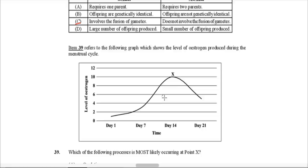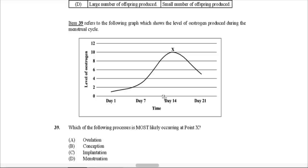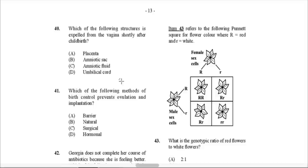Item 39 refers to a graph showing the level of estrogen produced during the menstrual cycle, with estrogen level on the y-axis and days on the x-axis. Point X shows estrogen at its highest level, occurring around day 14. Knowledge of the menstrual cycle tells us this can only be ovulation — when the egg is being released from the ovary. You usually have that increase of estrogen around ovulation.